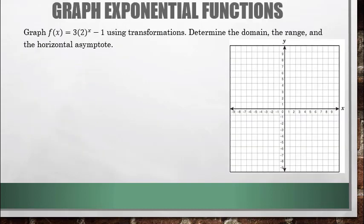Now let's graph a function. If we're asked to graph f of x equals 3 times 2 to the x, minus 1, using transformations, and determine the domain, range, and horizontal asymptote — the key is to first identify the parent graph and then list the transformations. Our parent function is going to be 2 to the x. In exponential functions, the parent is always A to the x, whatever that base is.